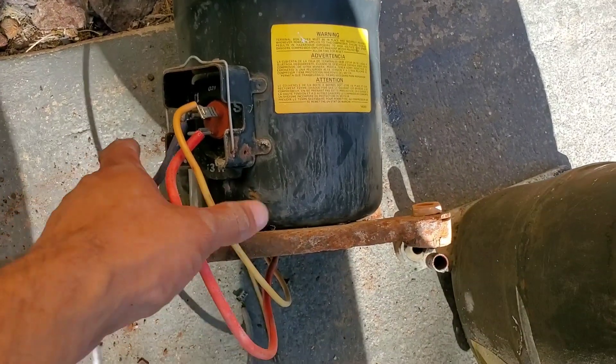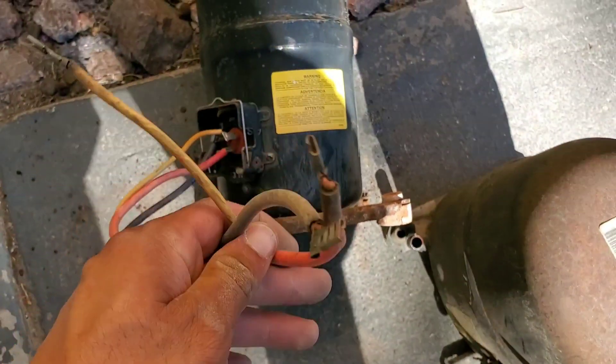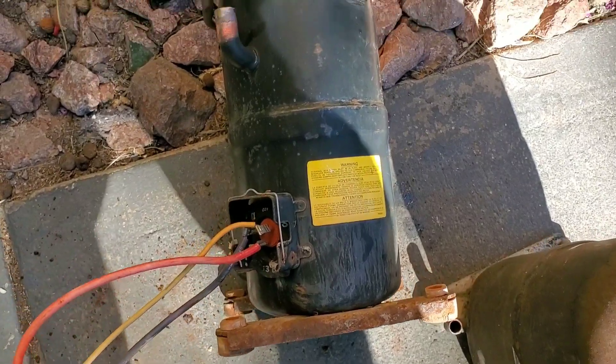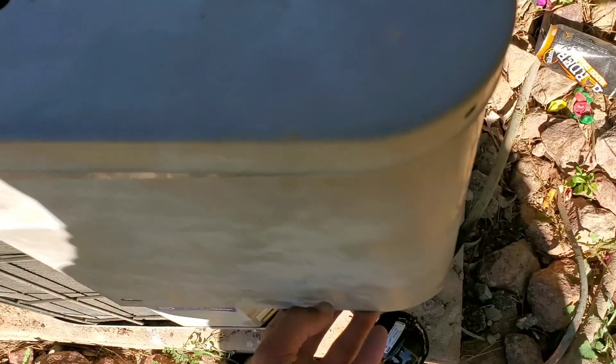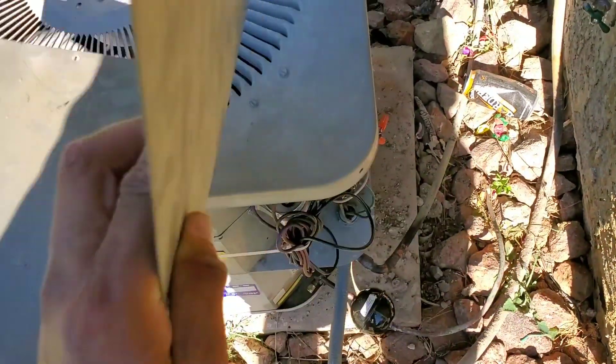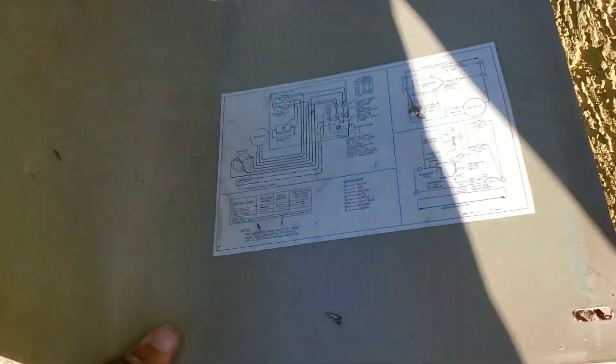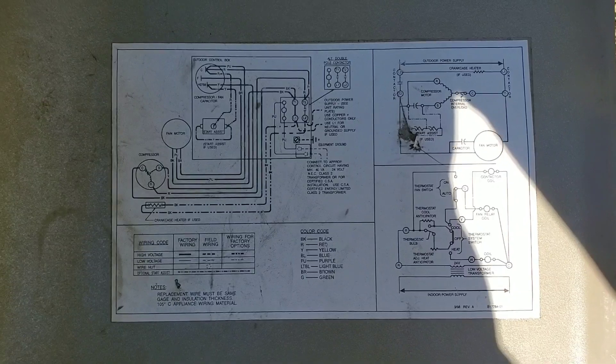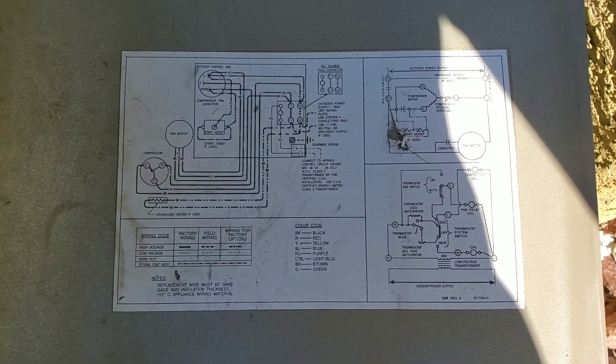In today's video we'll be talking about wiring a compressor based off the schematic. When we remove the panel, the schematics are right on the side of the condensing unit.